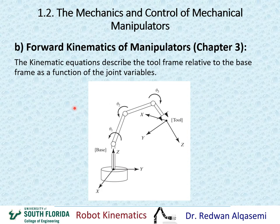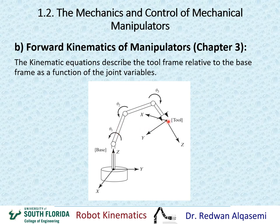In forward kinematics of manipulators, we use kinematic equations to describe the tool frame — or gripper, sometimes called the end effector — relative to the base frame as a function of the joint angles. So if I'd like to describe where the end effector is in XYZ and rotation about XYZ relative to the ground frame, I can describe this in terms of theta 1, theta 2, theta 3, and all the joints in my robotic arm. We call this forward kinematics.